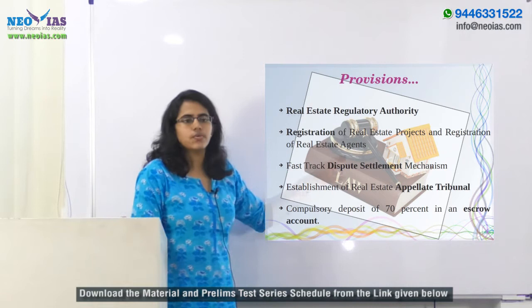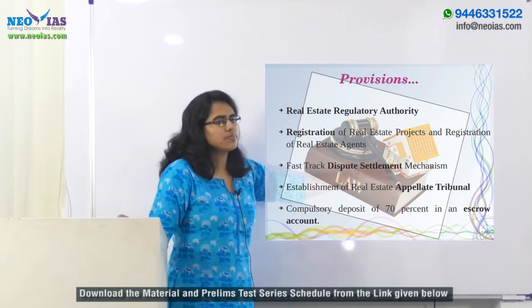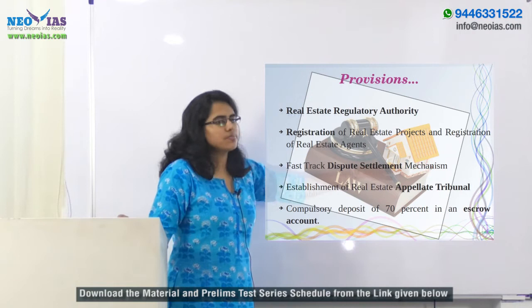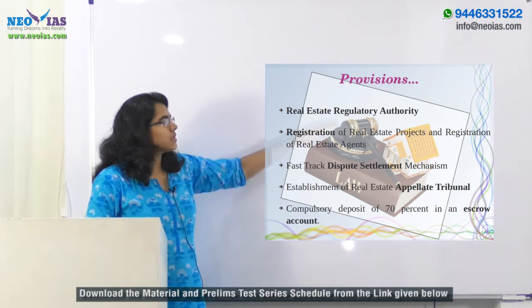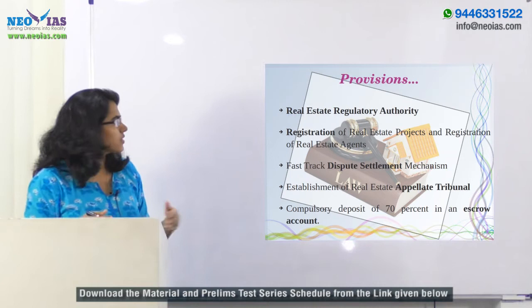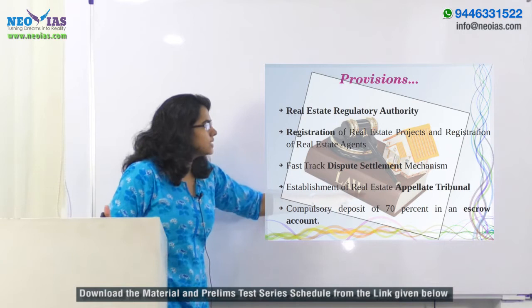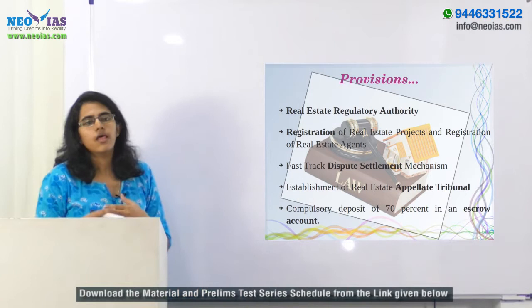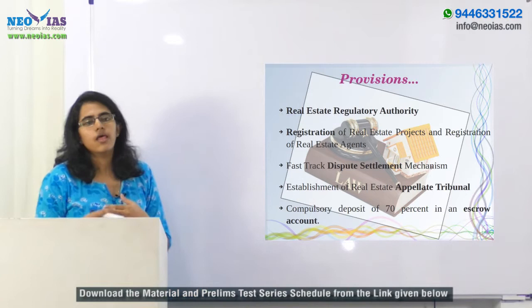Real estate agents will also have to register with this particular authority. There is a fast-track dispute resolution mechanism — earlier, grievances in this sector were taken up to the consumer courts, but now they will be handled by the Real Estate Regulatory Authority. If a person is not satisfied with the verdict, they can appeal to the Real Estate Appellate Tribunal, which will have to adjudicate the appeal within a time span of 60 days.